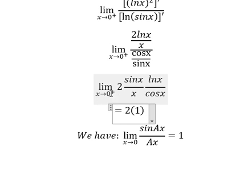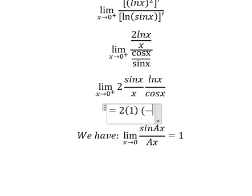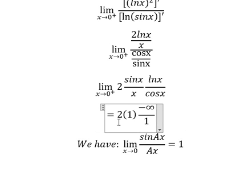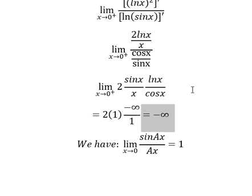When x approaches 0 from the right, this will go to negative infinity. Cosine of 0 equals 1, so in this situation, this equals negative infinity. That is the final answer.